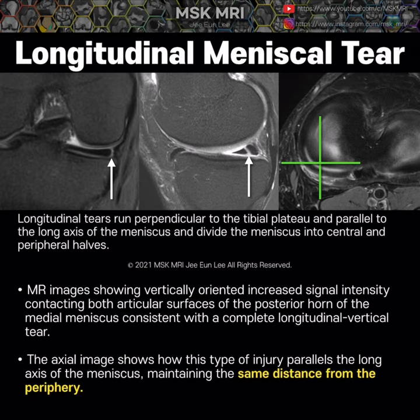Hi, this is Yenri from MSK MRI. Let's talk about the longitudinal meniscal tear. Longitudinal tears almost always involve the posterior horn in both the medial and lateral meniscus. Their diagnosis on MRI is by presence of a vertical line of high signal intensity contacting the superior, inferior, or both surfaces of the meniscus.